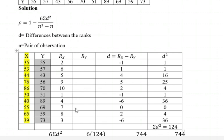We also rank column y in order from the least to the highest. So the least value, 43, takes rank 1. Then 51 is ranked 2nd. Then 55 is ranked 3rd. Then 56 is ranked 4th. Then 57 is ranked 5th. Then 59 is ranked 6th. Then 69 is ranked 7th. Then 70 is ranked 8th. Then 73 is ranked 9th. And lastly, 89 is ranked 10th.